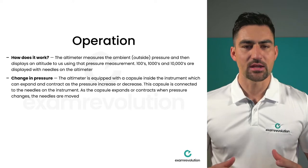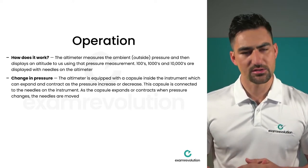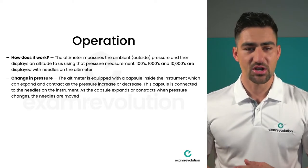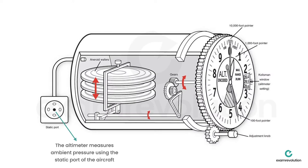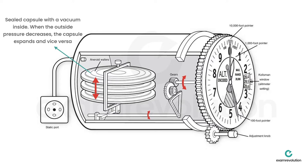The altimeter is equipped with a capsule inside that can expand and contract as pressure increases or decreases. This capsule is connected to the needles via a linkage system — as the capsule expands or contracts, the needles move. Looking at a cross-section of the altimeter, the static port measures outside air pressure, and that static pressure is fed into the aneroid — a sealed capsule with a vacuum inside.